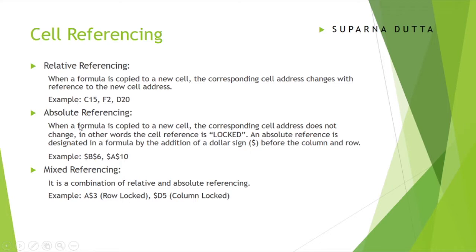In absolute cell referencing, when the formula is copied, the corresponding cell address does not change — in other words, the cell reference is locked. We lock the column and rows by prefixing a dollar sign before the column name and the row number. In absolute referencing, the dollar sign must be placed before both the column name and the row number — both column and row have to be locked.